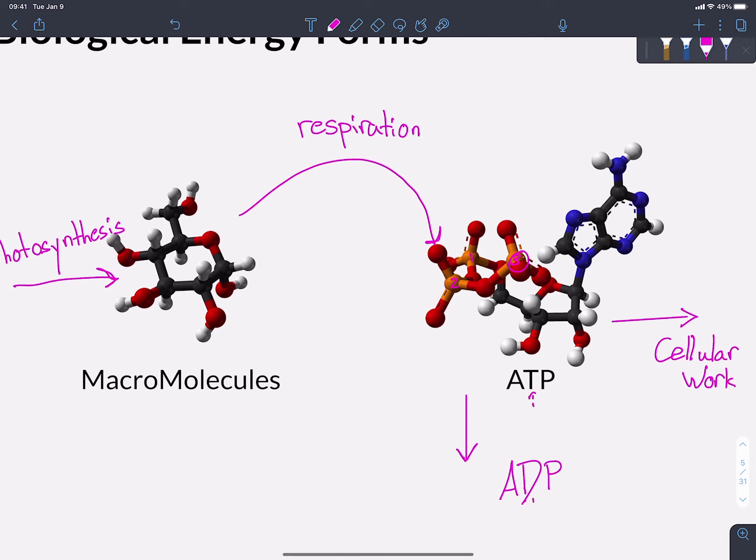The TP stands for triphosphate and the DP stands for diphosphate. The way that we convert ATP back into ADP is through the process of cellular respiration. So cells are going to use the energy that's stored in these biological macromolecules through the process of respiration in order to turn ADP back into ATP.